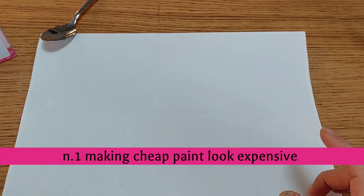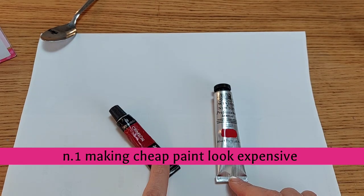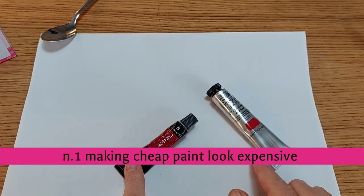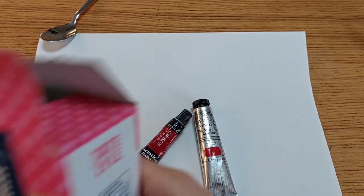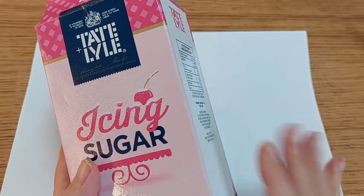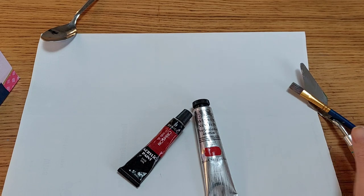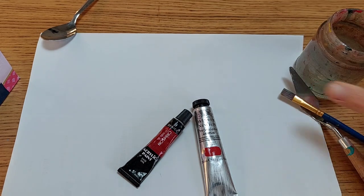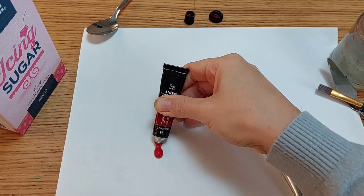For this art hack, what I need is two paints to compare: one on the super cheap side and one on the artist grade side, and icing sugar. I know, and then the usual one, just some brush, palette knife to mix, water and nothing else.